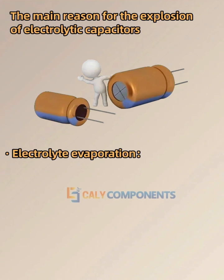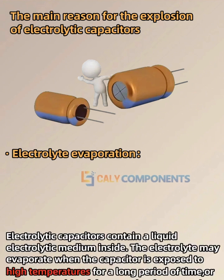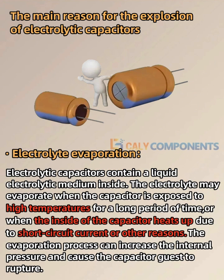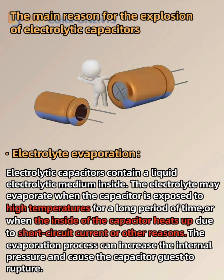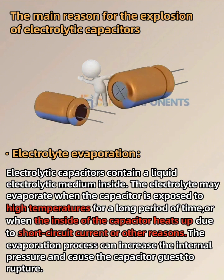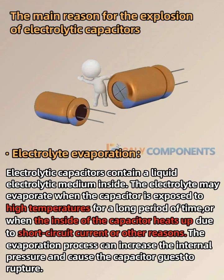1. Electrolyte evaporation. Electrolytic capacitors contain a liquid electrolytic medium inside. The electrolyte may evaporate when the capacitor is exposed to high temperatures for a long period of time, or when the inside of the capacitor heats up due to short-circuit current or other reasons. The evaporation process can increase the internal pressure and cause the capacitor to rupture.